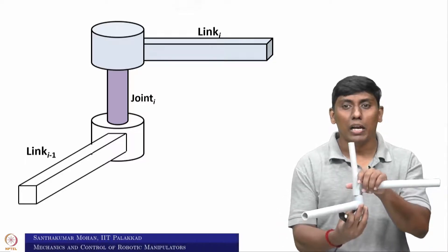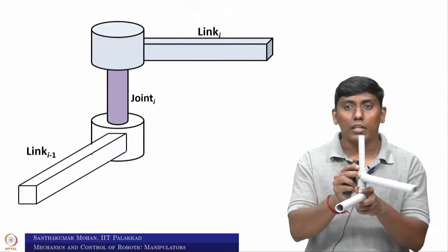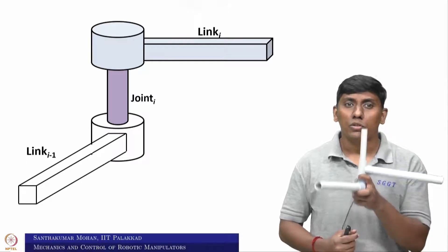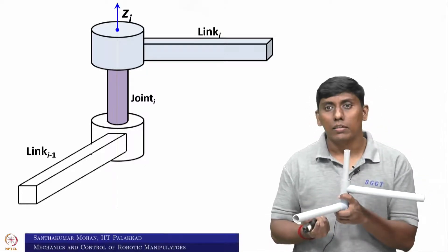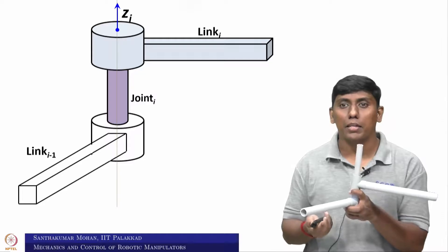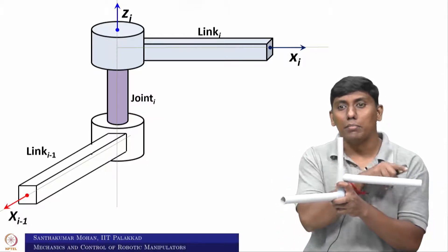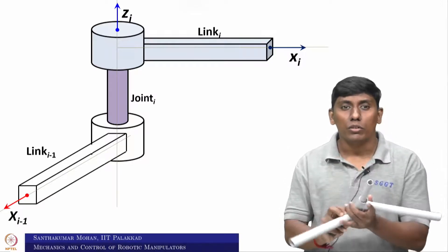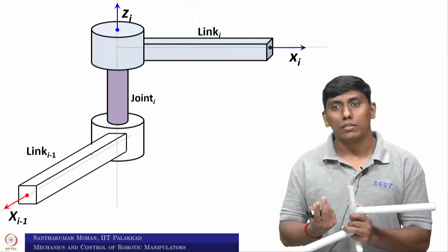These are the two links we have connected, and these two links are actually free about this joint — they can translate or rotate about it. We will first fix the joint axis. As per Denavit-Hartenberg, this joint axis is z_i. Now z_i is fixed, and the link would be having x_i and x_{i-1}. If you look at in the top view, you can see that these two links are actually angle apart.